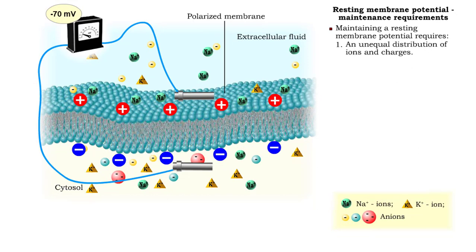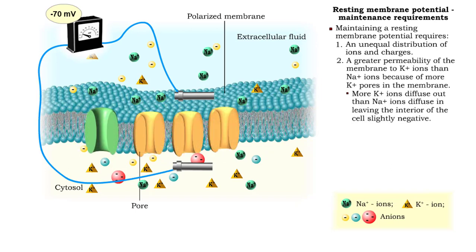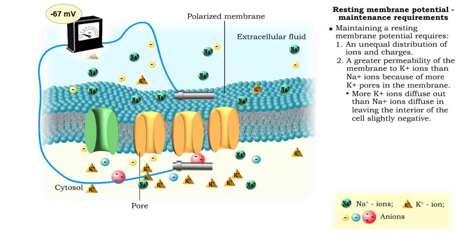First, an unequal distribution of ions and charges across the membrane. Second, a greater permeability of the membrane to potassium ions than sodium ions because of the presence of a greater number of potassium pores. This results in more positive ions leaving the cytosol and making the inside slightly more negative.